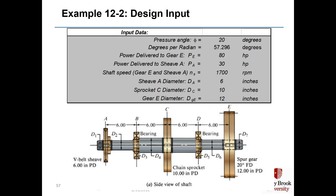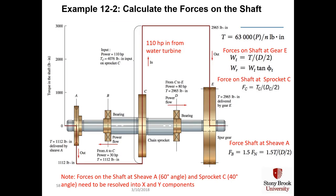Here's our design input: the different horsepower delivered to gear E and A, a pressure angle of 20 degrees, component sizes, and component spacing of 6 inches apart for all components. Now we calculate the forces on the shaft. The first step is to draw a diagram showing torque input and output. Torque input is at the middle at 110 horsepower via chain sprocket C, with 30 horsepower going to A and 80 horsepower distributed to E. Knowing horsepower and rpm allows us to calculate torques at A, C, and E, and from those, the tangential and radial forces at gear E.